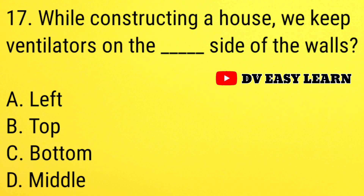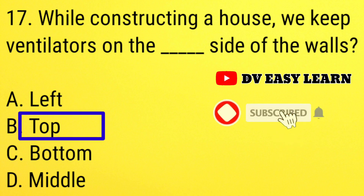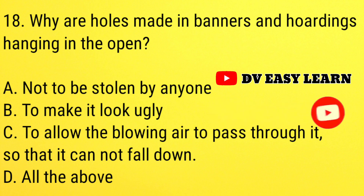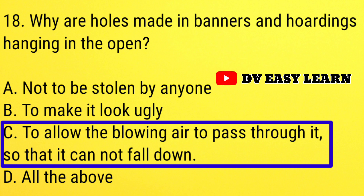Question number 17: while constructing a house, we keep ventilators on the dash side of the walls. Correct answer: top. Question number 18: why are holes made in banners and hoardings hanging in open? Correct answer: to allow the blowing air to pass through it, so that it cannot fall down.